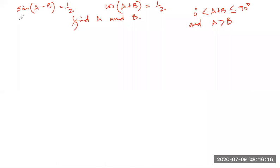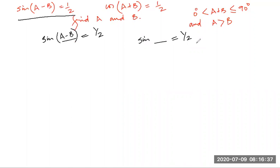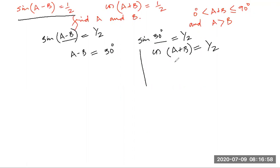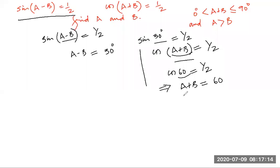Let's do one more sum. It is given that sin(A − B) = 1/2. Sine of which angle is 1/2? It's 30 degrees. So A − B equals 30 degrees. Then the second condition: cos(A + B) = 1/2. Cosine of which angle is 1/2? 60 degrees. So A + B equals 60 degrees. This is equation one and equation two.